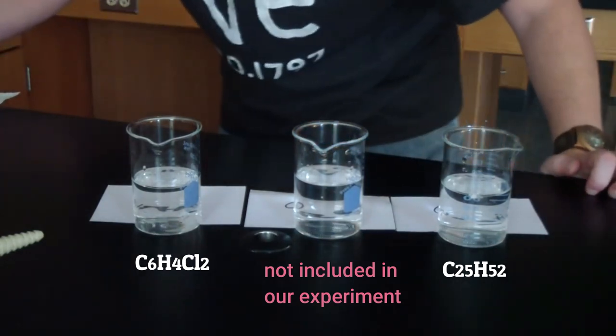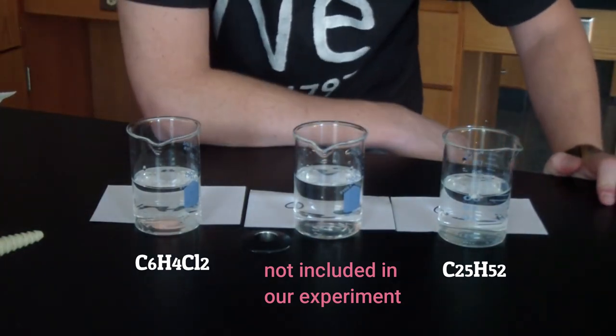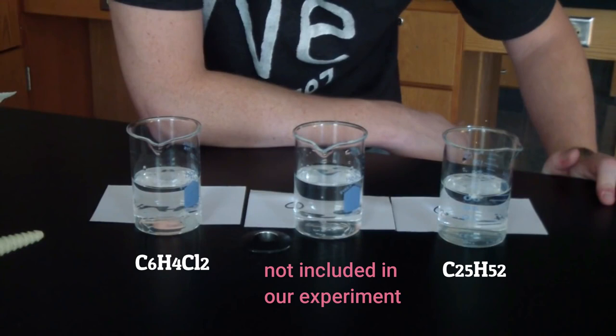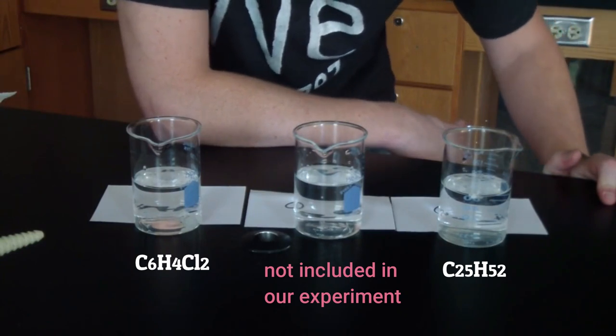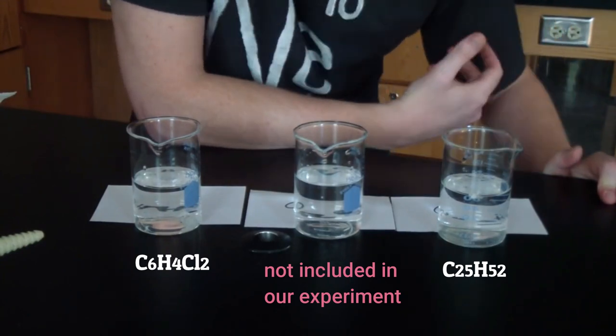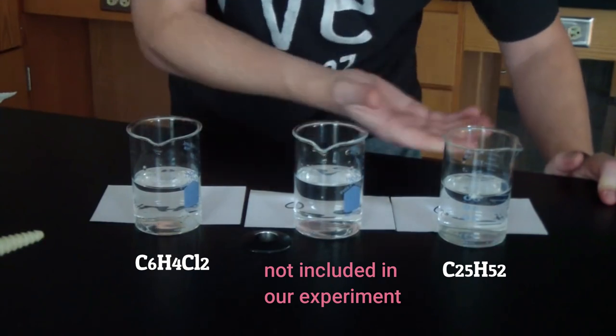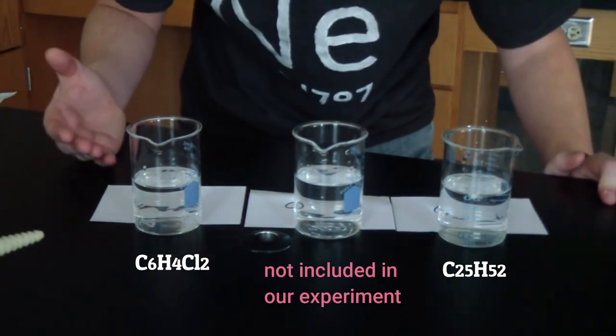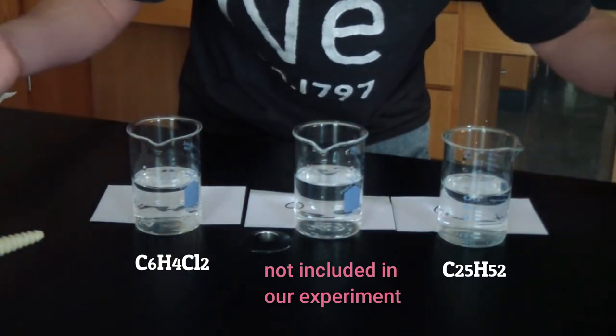So what's the deal? Ionic compounds conduct electricity, but covalents do not. Why? Because ionic compounds are made of ions, and ions are needed to conduct electricity. These covalent compounds here don't split into ions, therefore, they don't conduct.